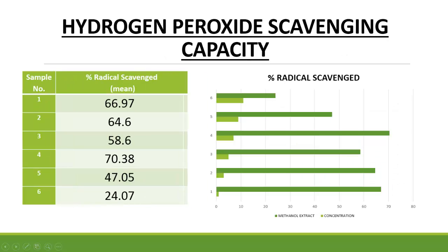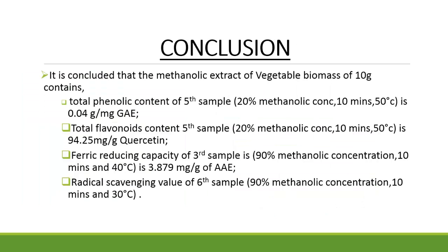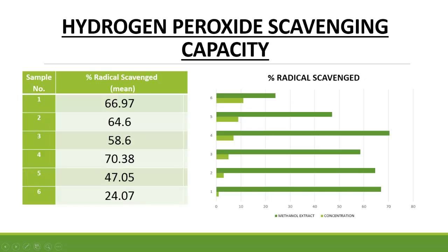The conclusion is as follows: the highest total phenol content was seen in the fifth sample at 0.04 grams per milligram GAE, treated under 20% methanolic concentration, 10 minutes, and 50 degrees Celsius. The total flavonoid content was highest in sample 5 at 20% methanolic concentration, 10 minutes, 50 degrees Celsius, with a value of 94.25. The reducing capacity was 3.879 at 90% methanolic concentration, 10 minutes, and 40 degrees Celsius. The radical scavenging capacity was highest in sample 6 at 90% methanolic concentration, 10 minutes, and 30 degrees Celsius, with a value of 2470.38. Thank you.